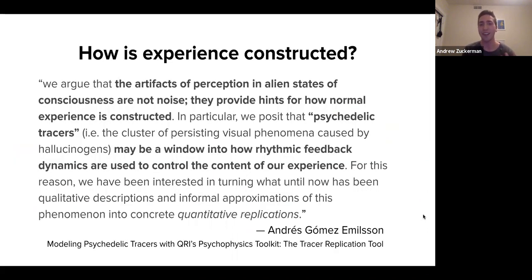There is a good representation on the left here of someone throwing an object, and you can see this huge trail following it. This is essentially what a tracer is. For us, why tracers in particular? I think Andres said it really well in this writeup of our tool. He wrote, the artifacts of perception in alien states of consciousness are not noise. They provide hints for how normal experience is constructed. And in particular, psychedelic tracers could be a window into how rhythmic feedback dynamics are used to control the content of our experience. Another way to think about this is that if our perception of this world in any moment is almost like a movie, in normal sober experience, the frames are moving so fast and are so short that it's really hard to understand how's this movie being made? But when you are on these psychedelics and you have these tracers, they can reveal clues about how long is the frame and what are the properties of this movie construction system. In these alien states, we get extra details about how this visual perception system is working.